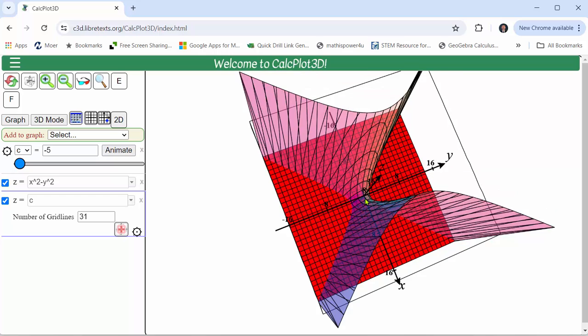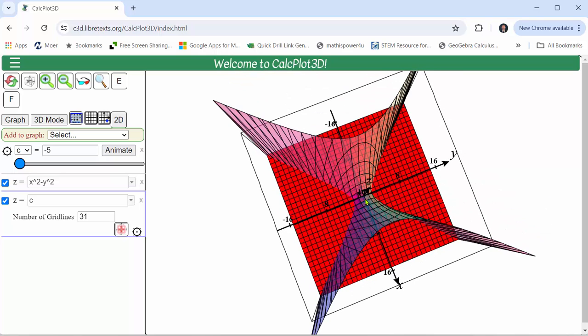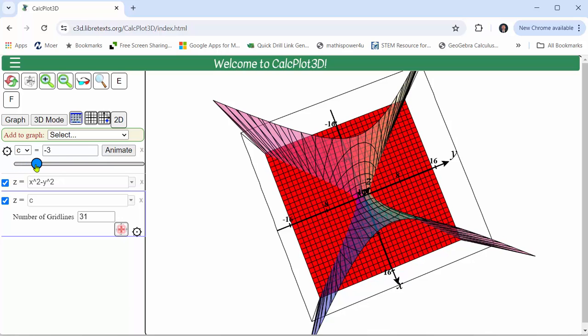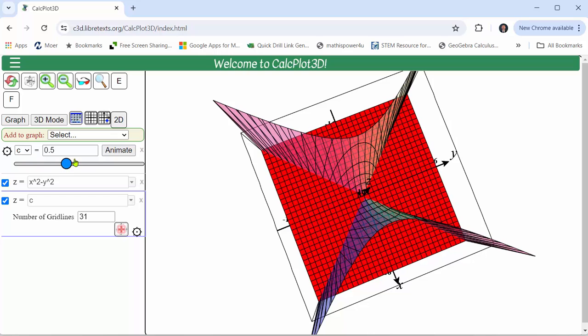If we look down on the xy plane the level curve appears to be a hyperbola and now let's animate the plane z equals c for various values of c. Each of these intersections represents a level curve for the function.